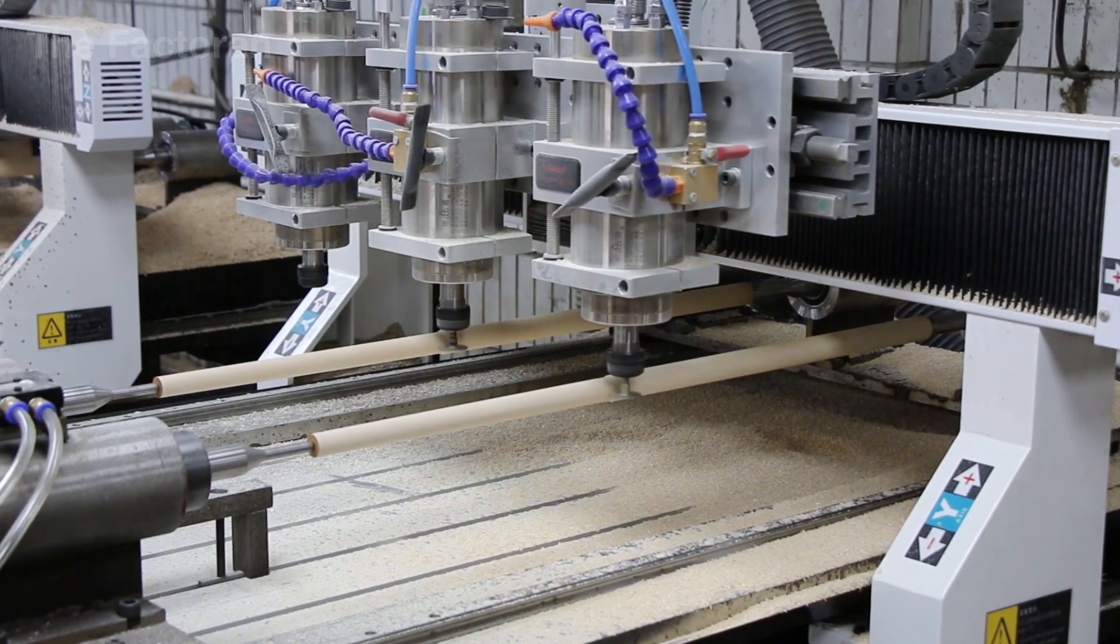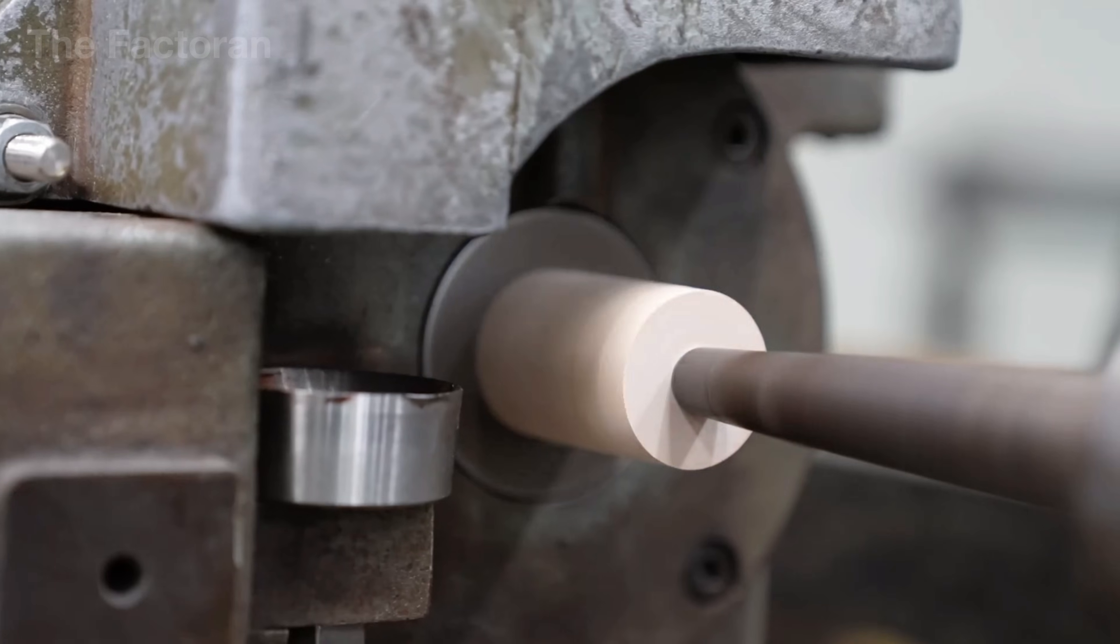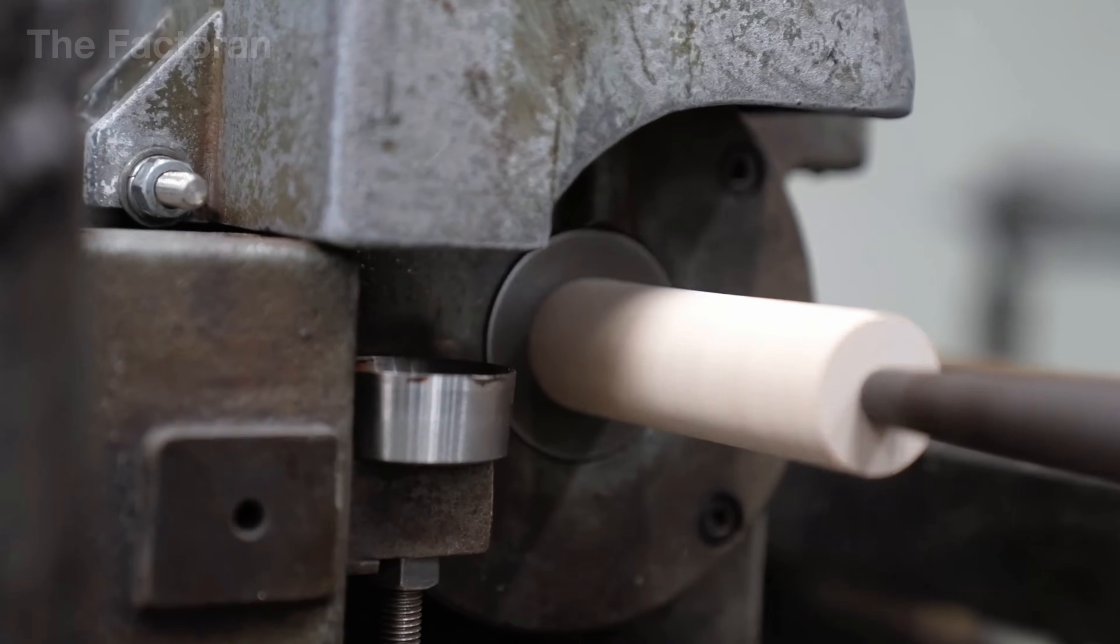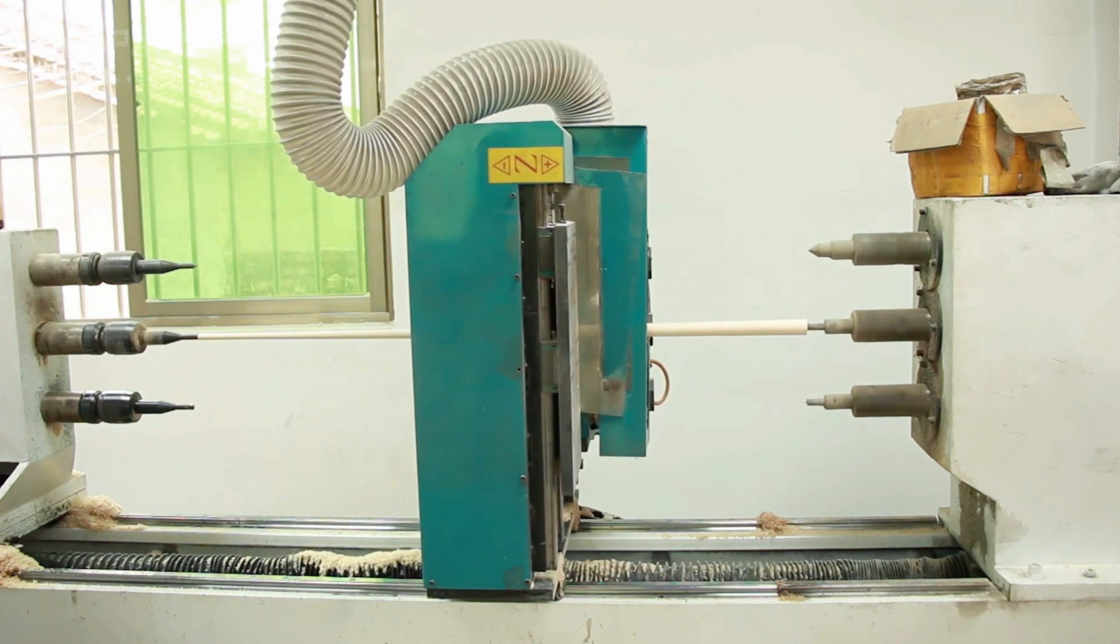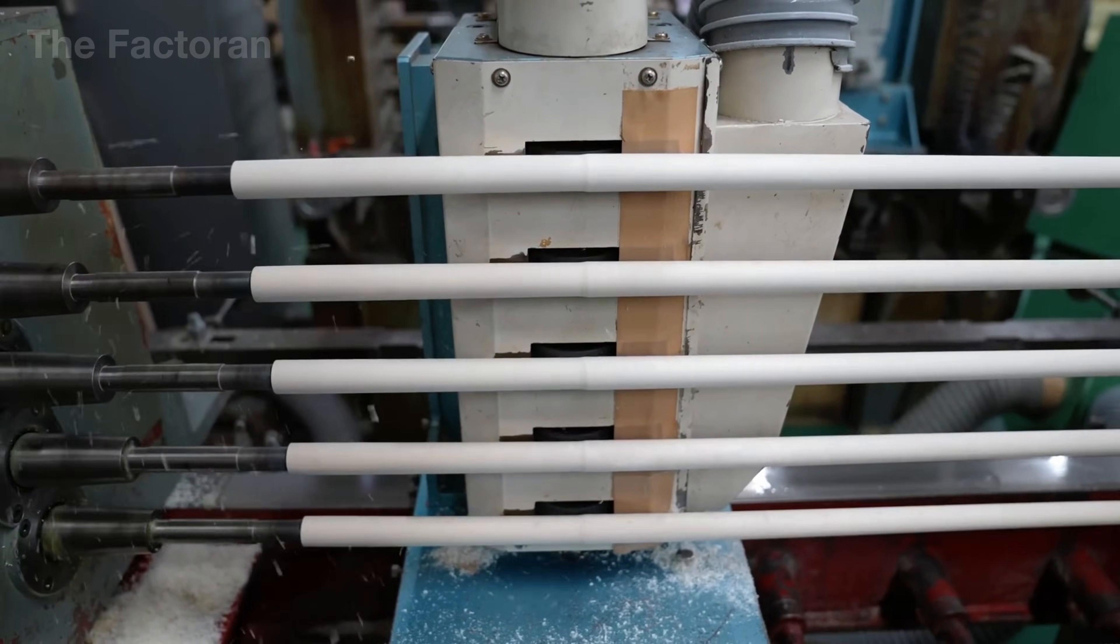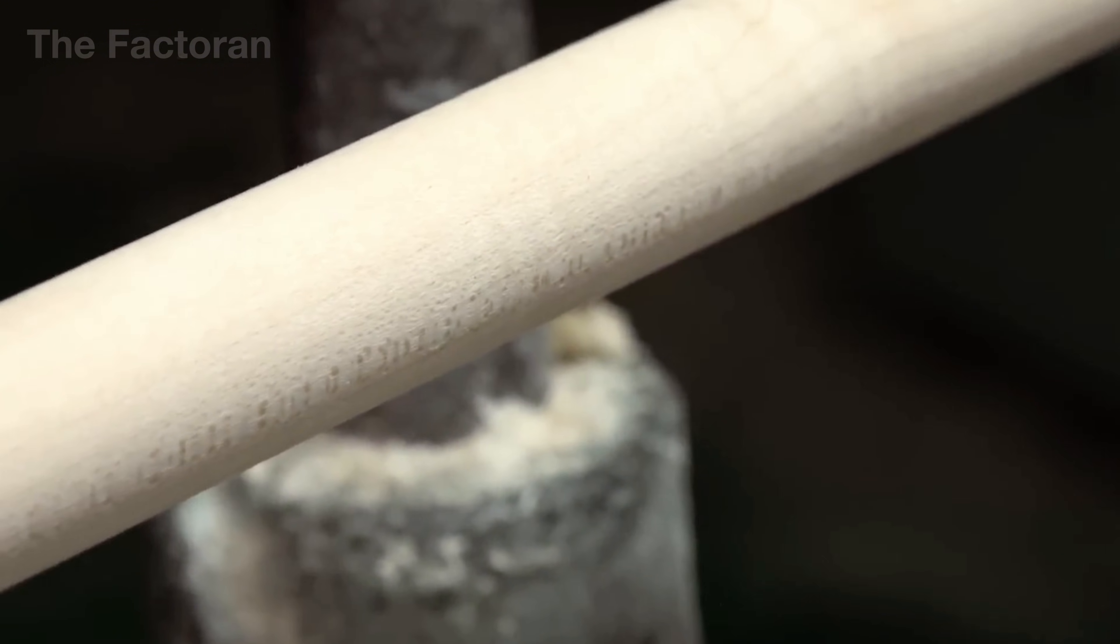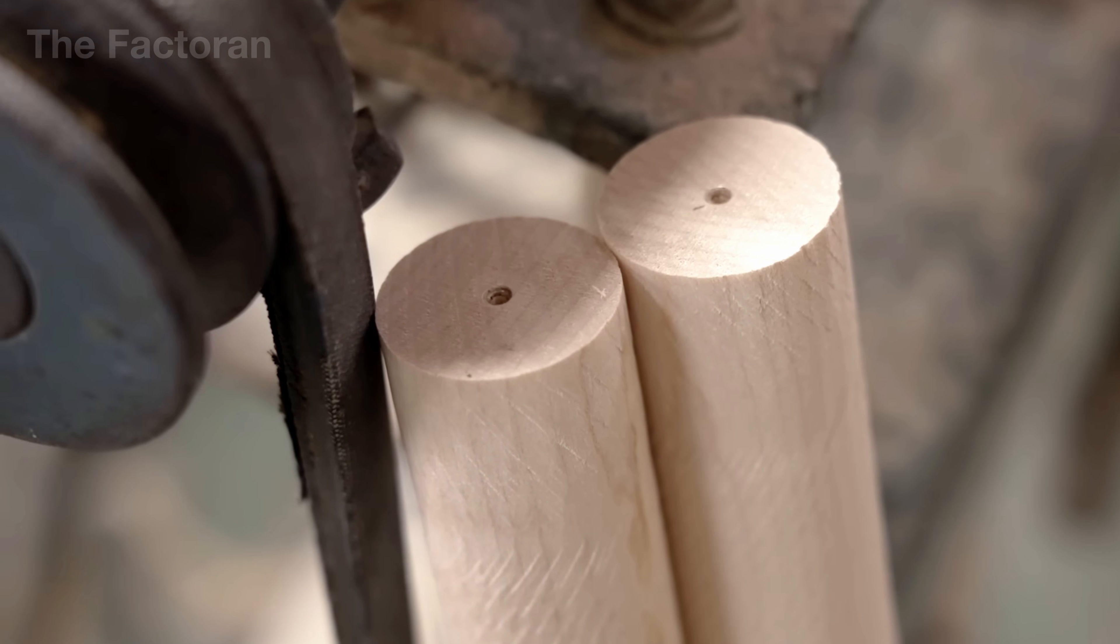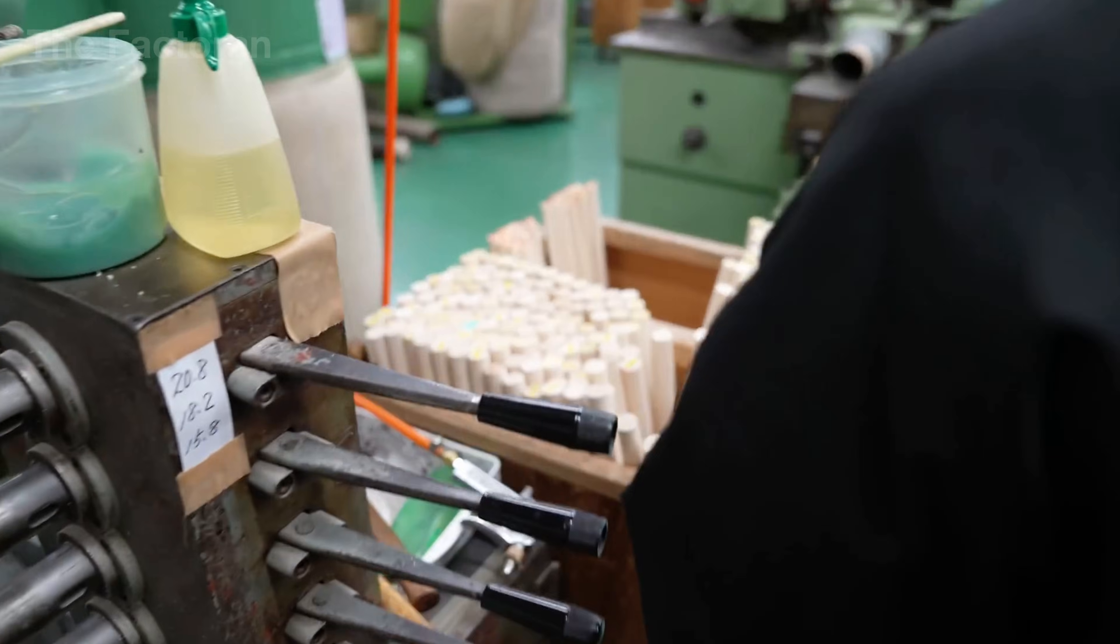After each pass, the blank is removed and allowed to rest. These resting periods are essential, because they let internal stresses inside the wood release naturally. Without them, the shaft could bend or twist later on. This cycle of turning, resting and turning again is the key to creating a stable, straight and durable wooden core. It forms the technical foundation that determines the quality of the billiard cue in every stage that follows.